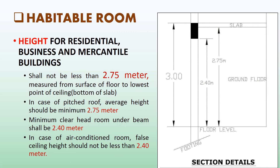Now let's discuss habitable room height requirements. The height of all rooms for human habitation shall not be less than 2.75 meters, measured from the surface of the floor to the lowest point of the ceiling or bottom of slab. In the case of a pitched roof, the average height shall not be less than 2.75 meters. The minimum clear headroom under a beam, folded plates, or eaves shall be 2.4 meters.